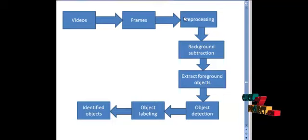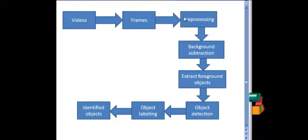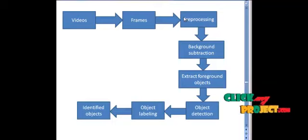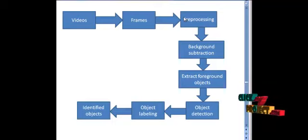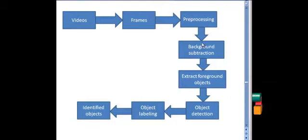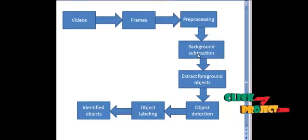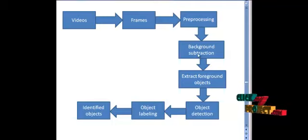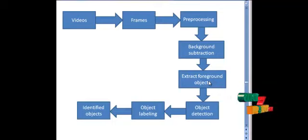Preprocessing is applied to the noisy video. The Gaussian filter is applied to remove the noises from the frames, smoothing the video and making all pixels in the image clearer. We use the imfilter function to apply the Gaussian filter. From the pre-processed frames, the backgrounds are eliminated using the frame differencing background subtraction method. The foreground objects are obtained by subtracting each frame from the empty background.